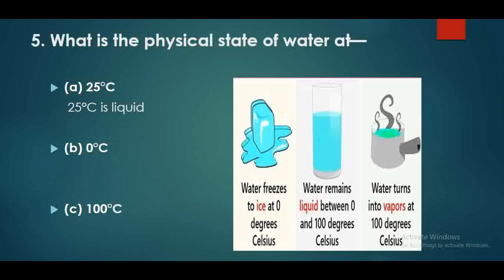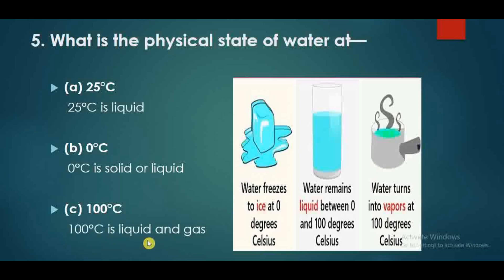At 0 degrees Celsius water converts into solid. We all know that at 0 degrees Celsius everything will freeze - in our freezer temperature, or in hill stations, water converts into solid. It will be solid at 0 degrees Celsius. Then at 100 degrees Celsius, it starts vaporizing and evaporates - so at 100 degrees Celsius we have liquid and gas states.